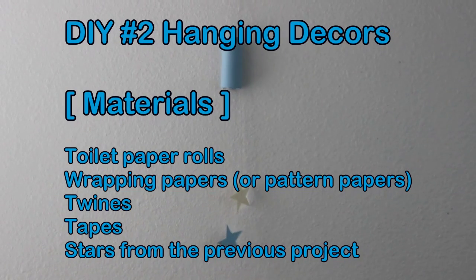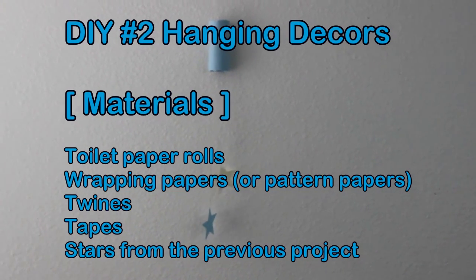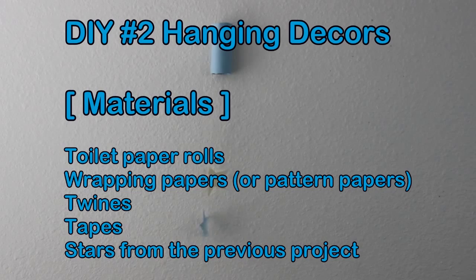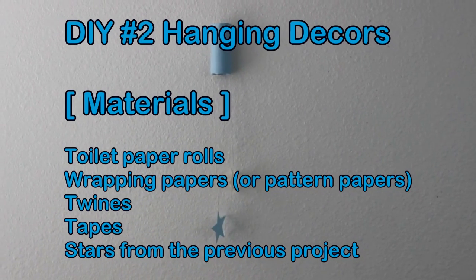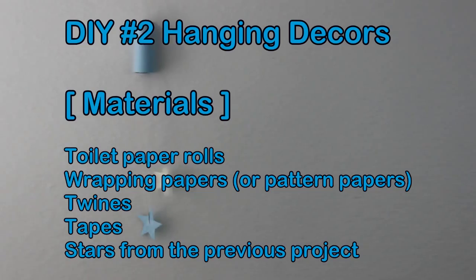DIY number 2. Hanging Decors. For this project, you will need toilet paper rolls, wrapping paper or pattern papers, tapes, twines, and stars from the previous project.